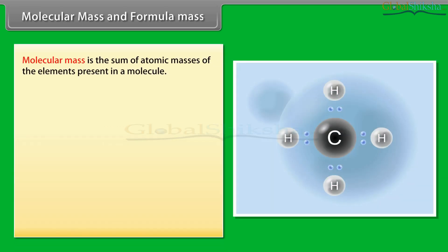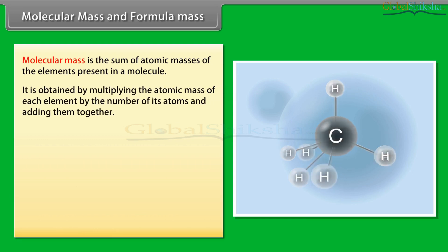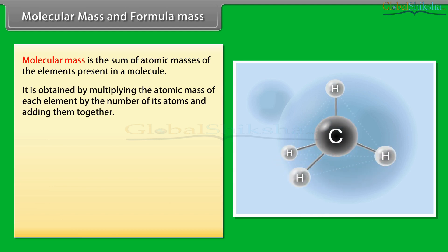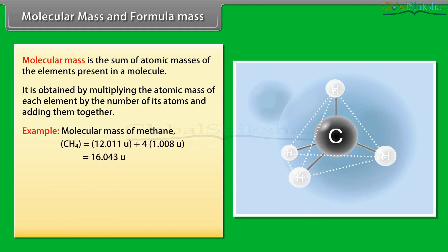Molecular mass and formula mass: molecular mass is the sum of atomic masses of the elements present in a molecule. It is obtained by multiplying the atomic mass of each element by the number of its atoms and adding them together. For example, the molecular mass of methane CH₄ equals 12.011u plus 4 × 1.008u, which equals 16.043u.